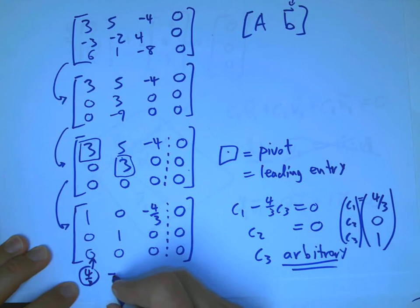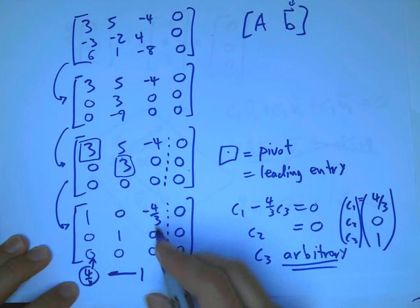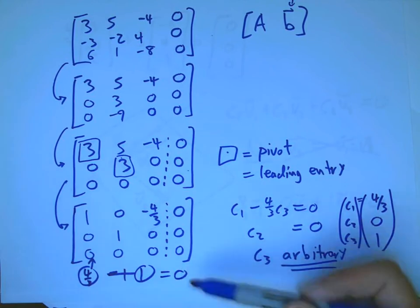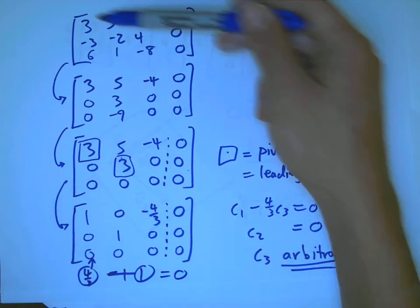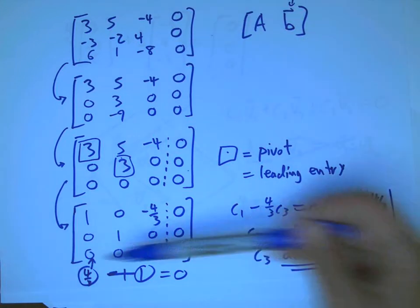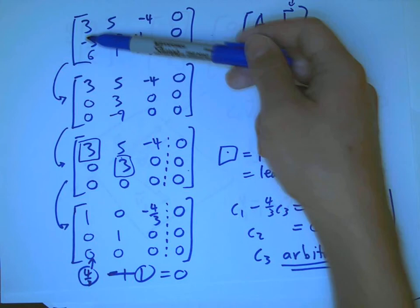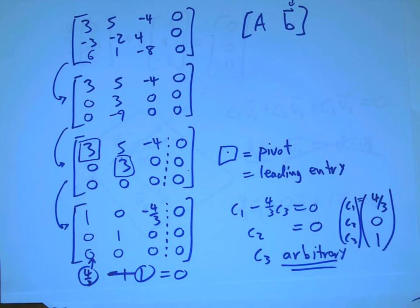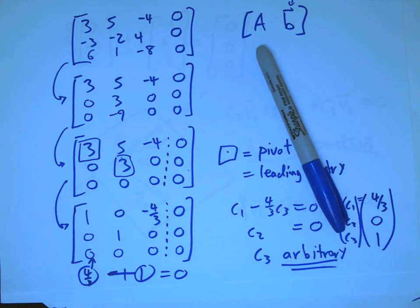And so the fact that four-thirds times this column plus one times this column gives us zero. That must have been true up here. Now here, it's pretty easy to see because it's such a simple dependence relationship. But in the example in class, it was more interesting. Any dependence relationship among the columns here is the same as what I get up here. And that's one of the theorems in the book. I think it was page 71 or something like that.